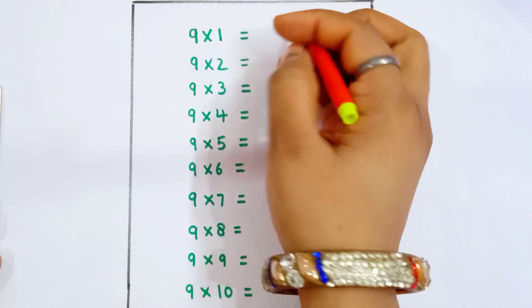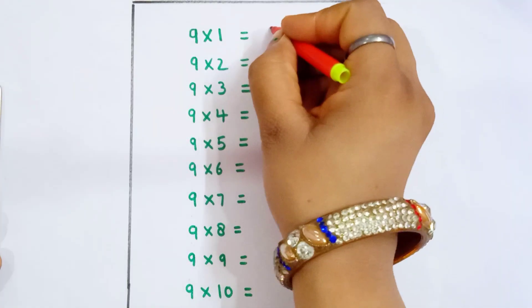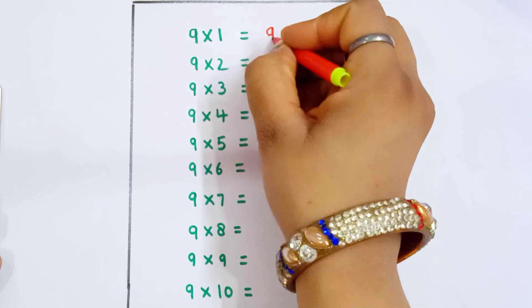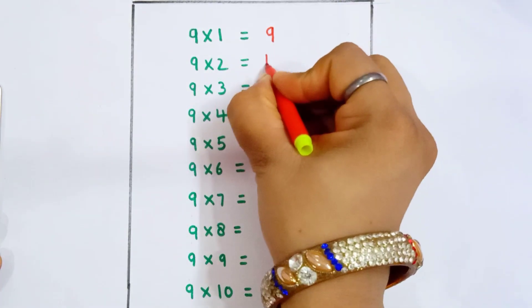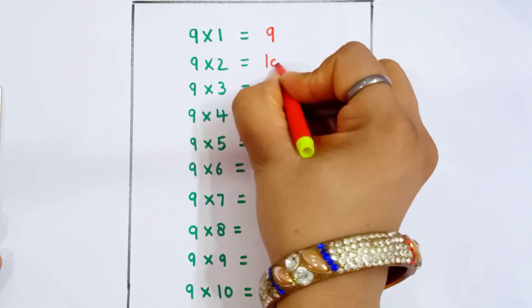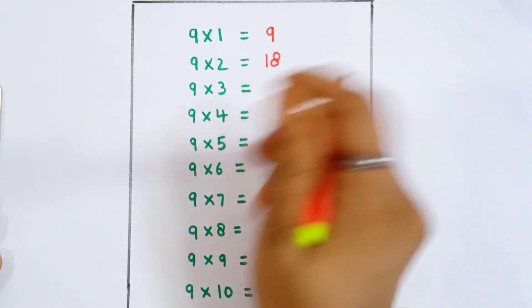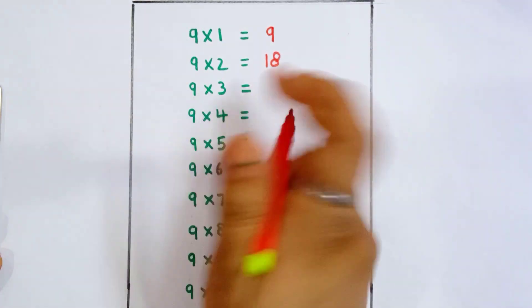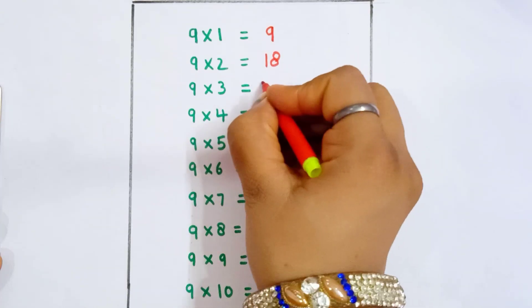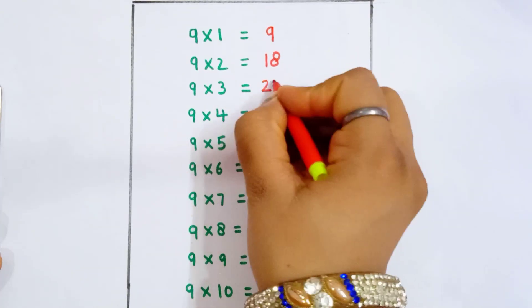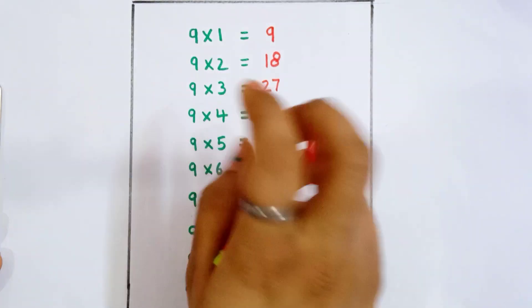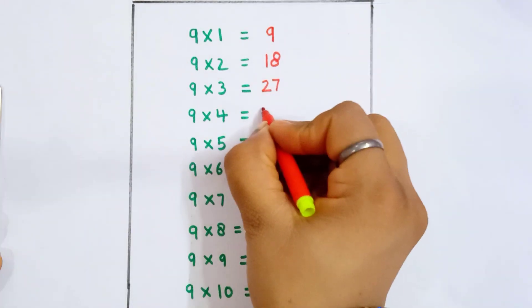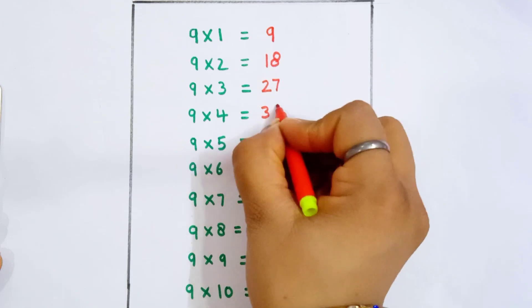9 1 is 9. 9 2 is 18. 9 3 is 27. 9 4 is 36.